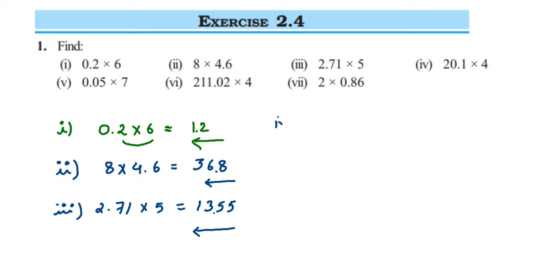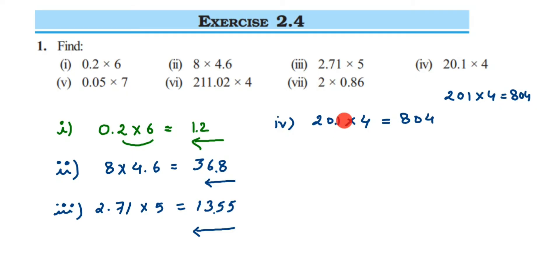The fourth problem is 20.1 multiplied by 4. Multiply 201 × 4 = 804. After the decimal we have only one digit, so from the right side after one digit — after the 4 — we place the decimal. The answer is 80.4.